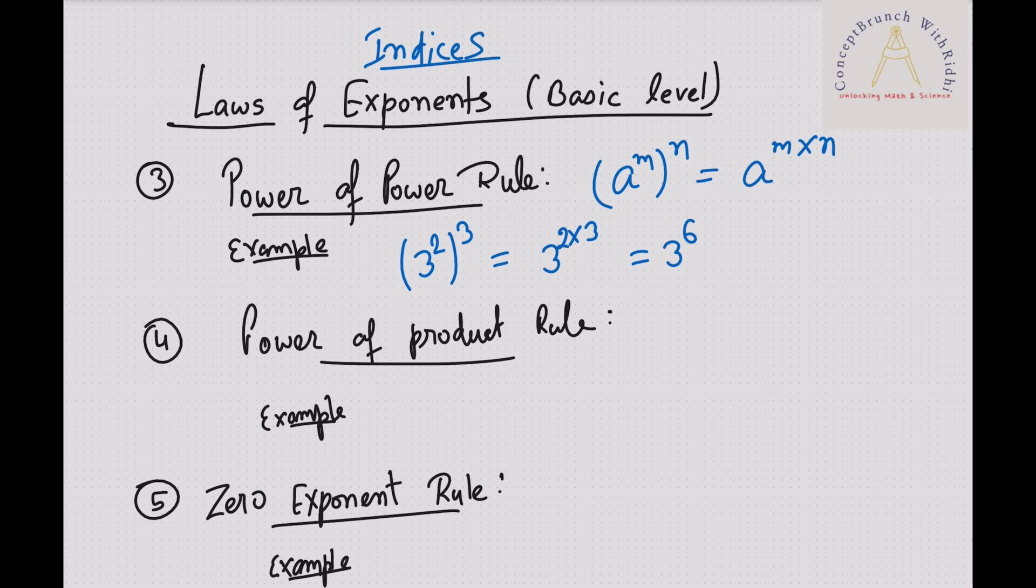Next one is the power of product rule. Power of the product rule is: a times b to the power m, we can break it as a to the power m times b to the power m. For example, 2 times 3 whole square we can write as 2 square times 3 square, and we can simplify afterwards. We can write as 4 times 9 also, and you can write the answer as 36 also.